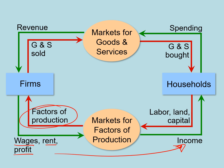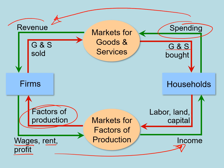That income, once it reaches households, will be made into spending — spending on goods and services that are made by firms. That spending, after it goes to markets for goods and services, will be revenue for the firms.